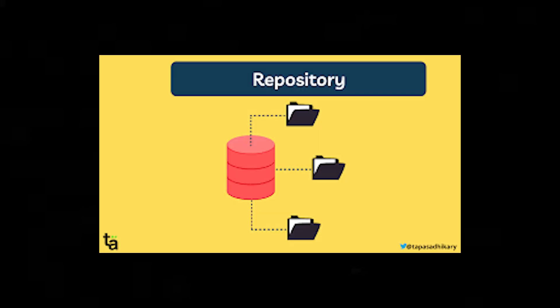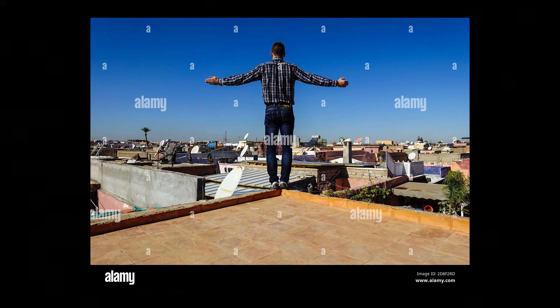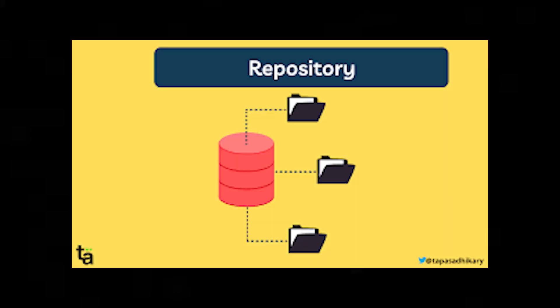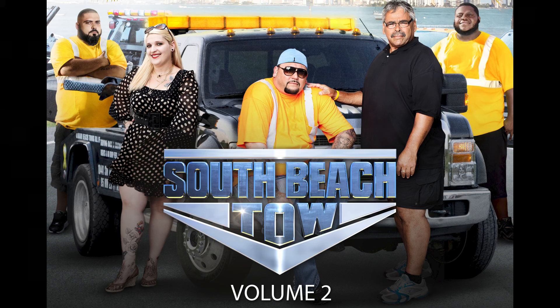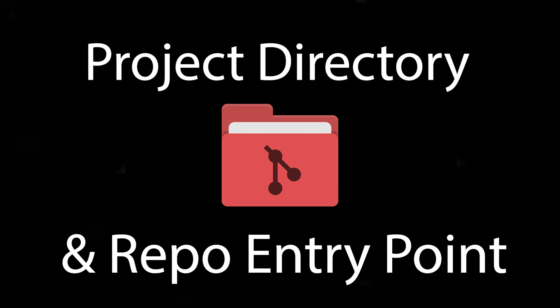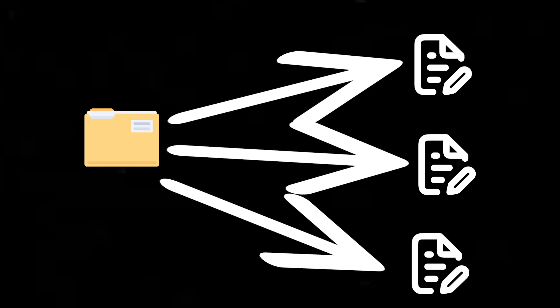Git is structured in repositories, and each of these repositories has branches and commits. Repositories, or repos, are the folders — or directory if you're a nerd — that is considered the main working directory of your project. The main working directory would be considered the start of the repository, and Git will track any changes made to any of the files inside of the working directory.